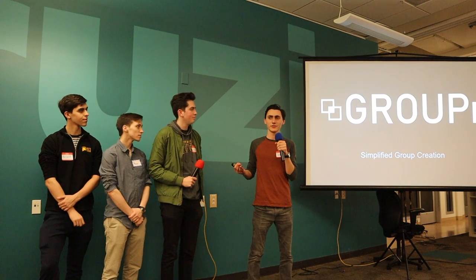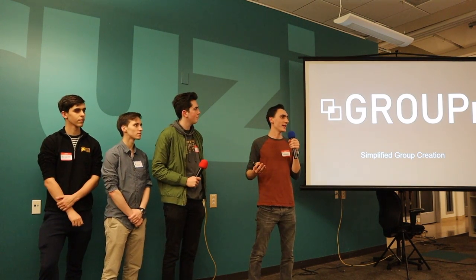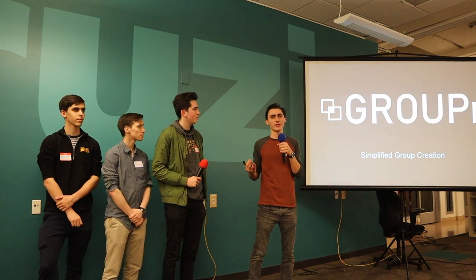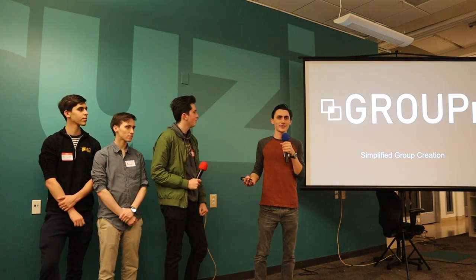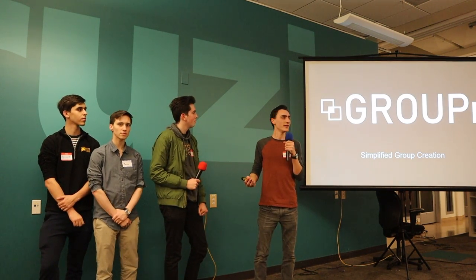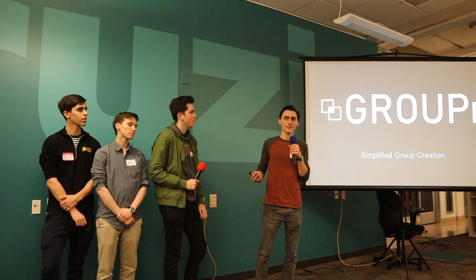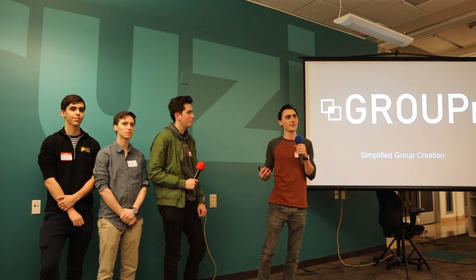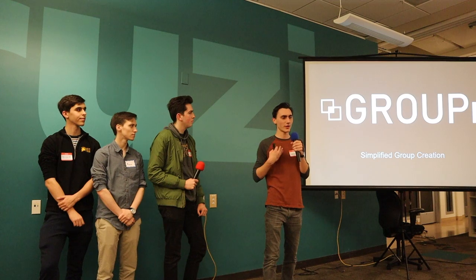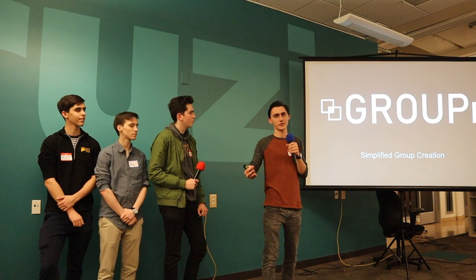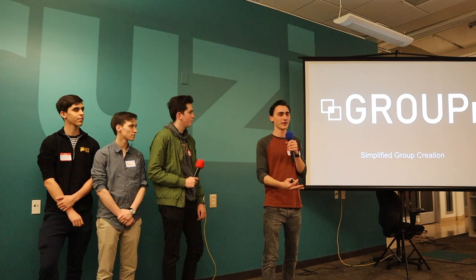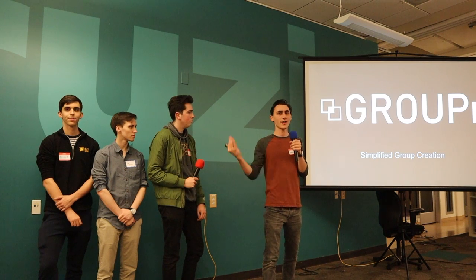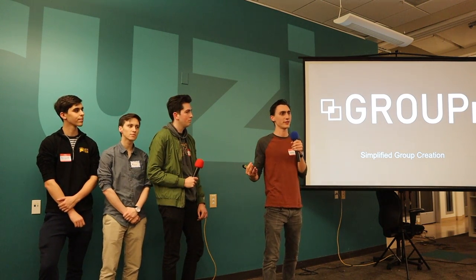Even though everybody has the option to join a group, when you actually take the class, the majority of students are just choosing to do things by themselves. A large part of this is social anxiety. In order to form an effective group, someone has to take charge — be the leader and say 'I'm going to work with this stranger I don't know,' decide if people will work well together, and construct an entire group out of strangers.